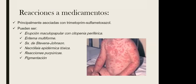Las reacciones a medicamentos son más frecuentes en VIH. Hay que evitar el trimetoprim-sulfametoxazol en estos pacientes porque es muy frecuente que presente alteraciones cutáneas. Entre ellas: erupción maculopapular con citopenia periférica, eritema multiforme con lesiones en diana, el síndrome de Stevens-Johnson y la necrólisis epidérmica tóxica —un estadio más grave— que requiere tratamiento rápido, reacciones purpúricas y pigmentación.